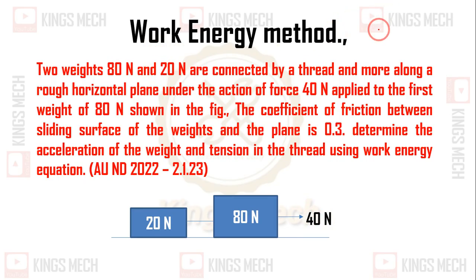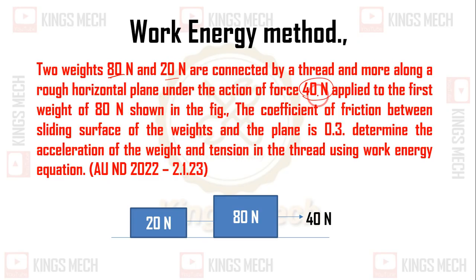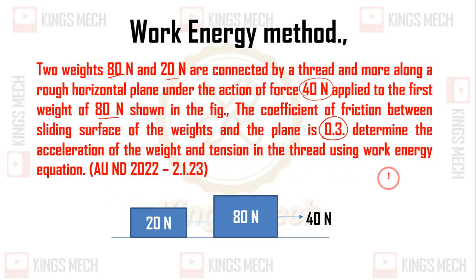We are going to the problem now. Two weights, 80N and 20N, are connected by a thread and move along a rough horizontal plane under the action of a force of 40N applied to the first weight (80N) as shown in the figure. The coefficient of friction between the sliding surfaces of the weights and the plane is 0.3. We need to find the acceleration of the weights and the tension in the thread using the work energy equation.